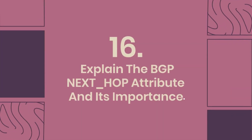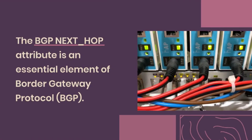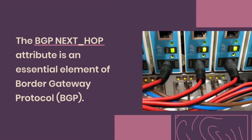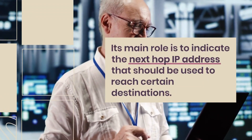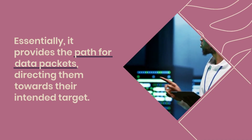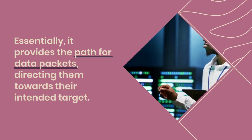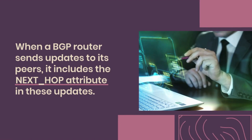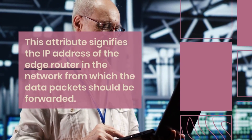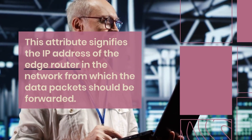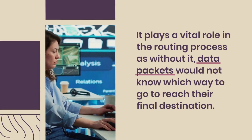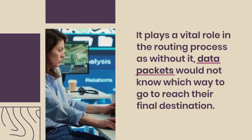Explain the BGP NEXT_HOP attribute and its importance. The BGP NEXT_HOP attribute is an essential element of Border Gateway Protocol. Its main role is to indicate the next hop IP address that should be used to reach certain destinations, essentially providing the path for data packets and directing them toward their intended target. When a BGP router sends updates to its peers, it includes the NEXT_HOP attribute, signifying the IP address of the edge router from which data packets should be forwarded. Without it, data packets would not know which direction to travel to reach their final destination.